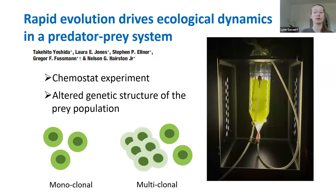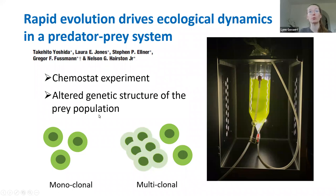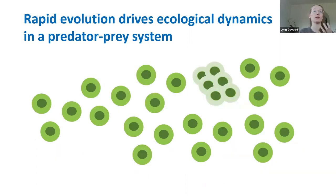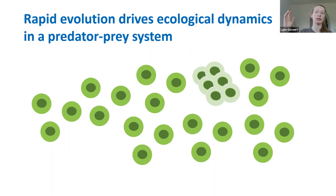One of the best known examples of rapid evolution altering ecological dynamics comes from a study on a predator-prey system, where Yoshida and colleagues performed a chemostat experiment using rotifer and algae populations. They used a monoclonal versus multi-clonal prey population, in which different prey genotypes experienced a different defense-growth trade-off. In the absence of the predator, the undefended prey genotype — the single cell colony — has a competitive advantage and increases in abundance.